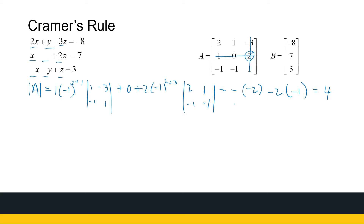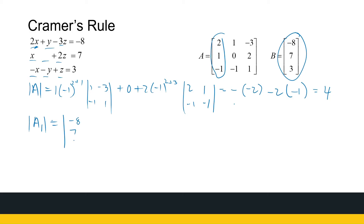The determinant is non-zero, so we can use Cramer's rule. To find X, I look at the determinant of matrix A1. A1 is what I get if I substitute the first column with matrix B: -8, 7, 3 instead of the first column, keeping the remaining columns as 1, -3 / 0, 2 / -1, 1. It's brilliant mathematics that this actually works — I just divide two determinants to find the value of X.